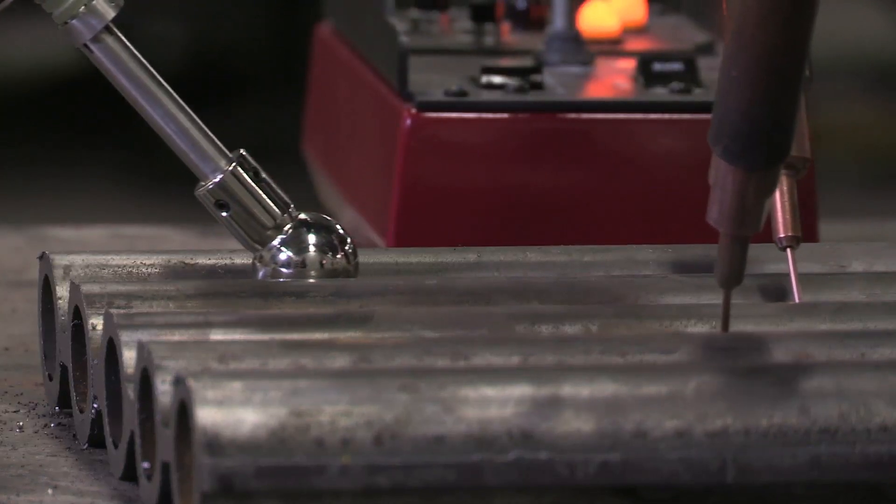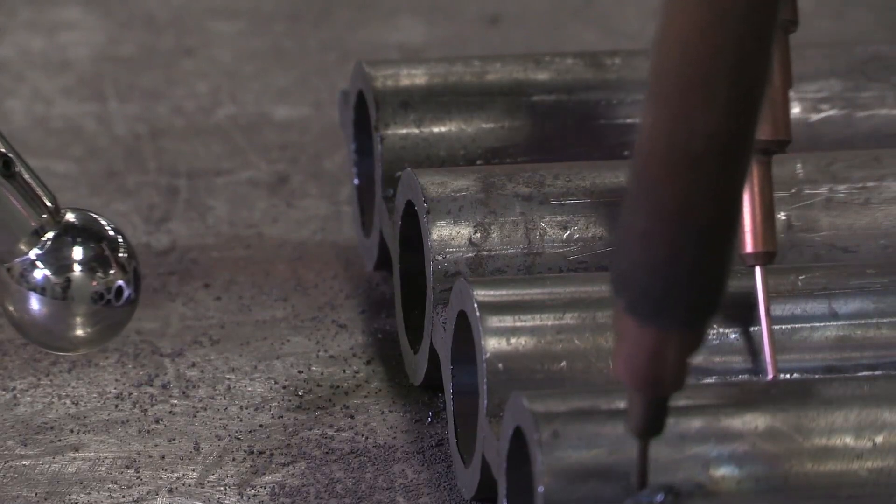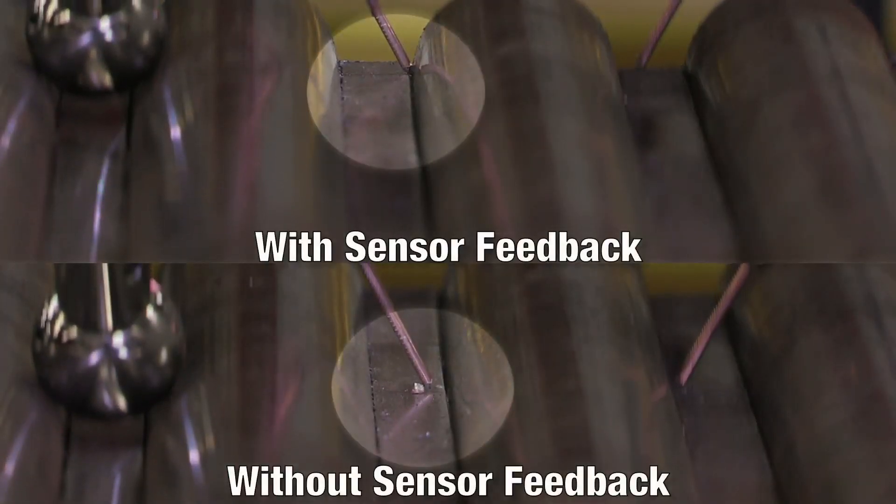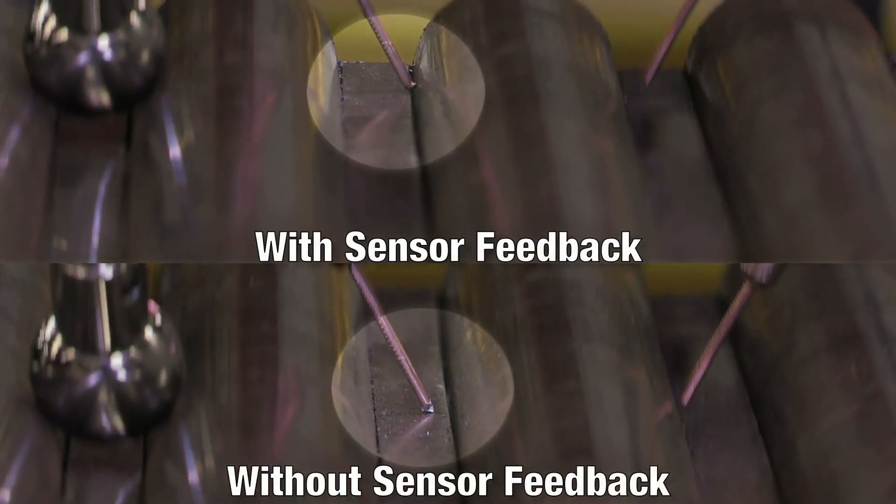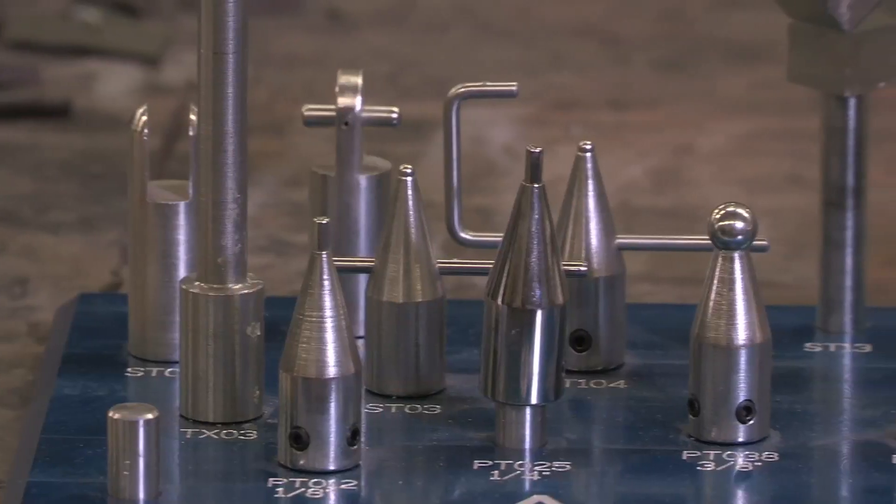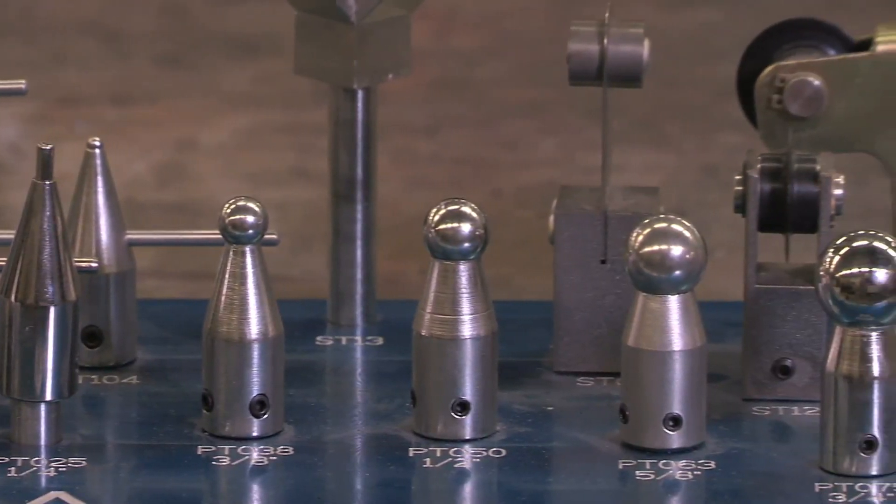Each tactile seam sensor tracks the joint by responding to the probe tip movements in both the X and Y axes and sends position feedback to the controller. This sensor feedback loop enables the system to maintain five thousandths of an inch accuracy to keep the arc aligned in the joint. Lincoln Electric offers 15 standard sensor tip styles to support almost any application.